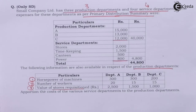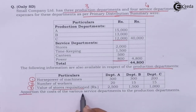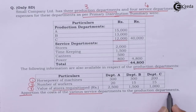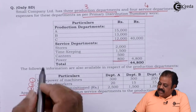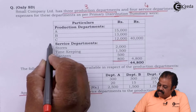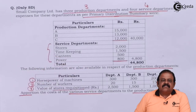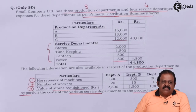We are required to apportion the cost of various service departments to the production departments — in other words, we need to allocate overheads as per primary distribution of each service department to the production departments.